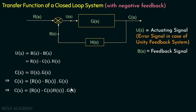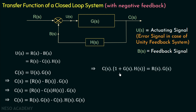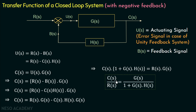Now we will open this bracket and multiply GS. We will have CS equal to RS multiplied with GS minus CS times HS times GS. If we transpose this factor to the left hand side and take CS common, then we will have CS multiplied with 1 plus GS times HS equal to RS multiplied with GS. Transposing RS to the left hand side and the factor to the right hand side, we get CS over RS equal to GS divided by 1 plus GS multiplied with HS. This is the transfer function for the closed loop system with negative feedback.